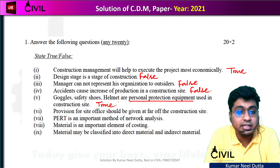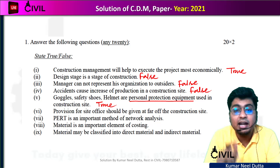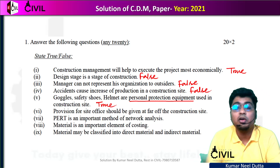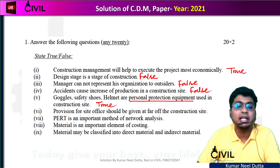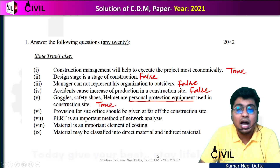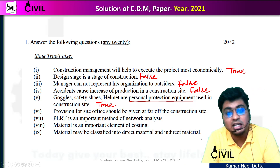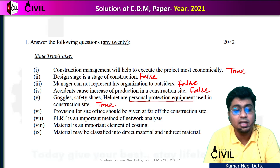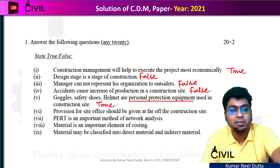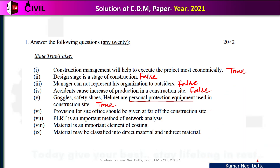Number 6: provision for a site office should be given far from the construction site. Our site office should be at the construction site, not 5–10 km away. The engineer needs to visit the site at the required time. If we are far off, it will be false. So number 6 is false.